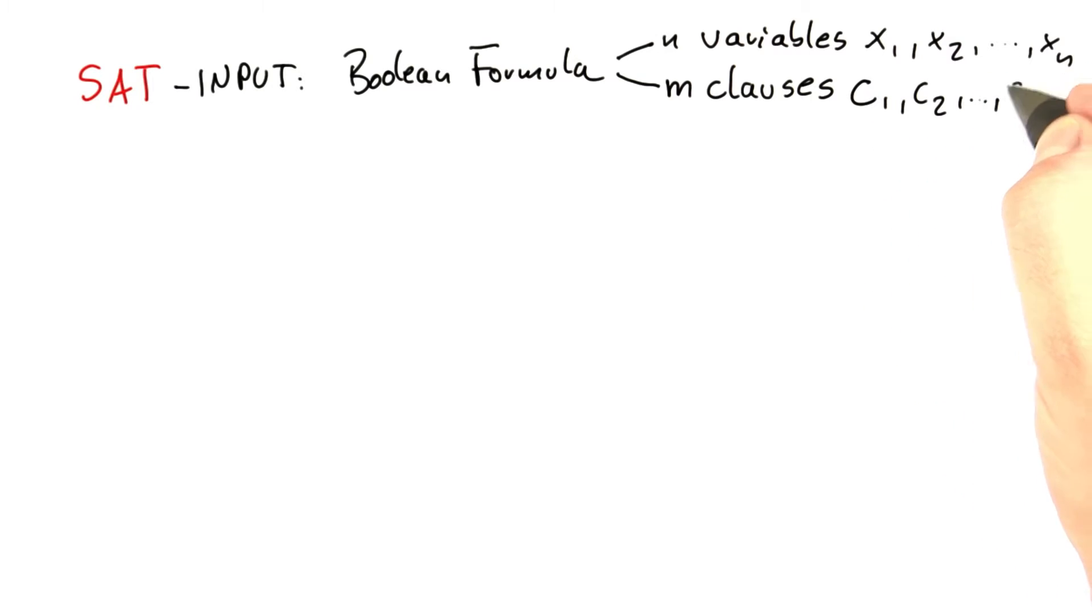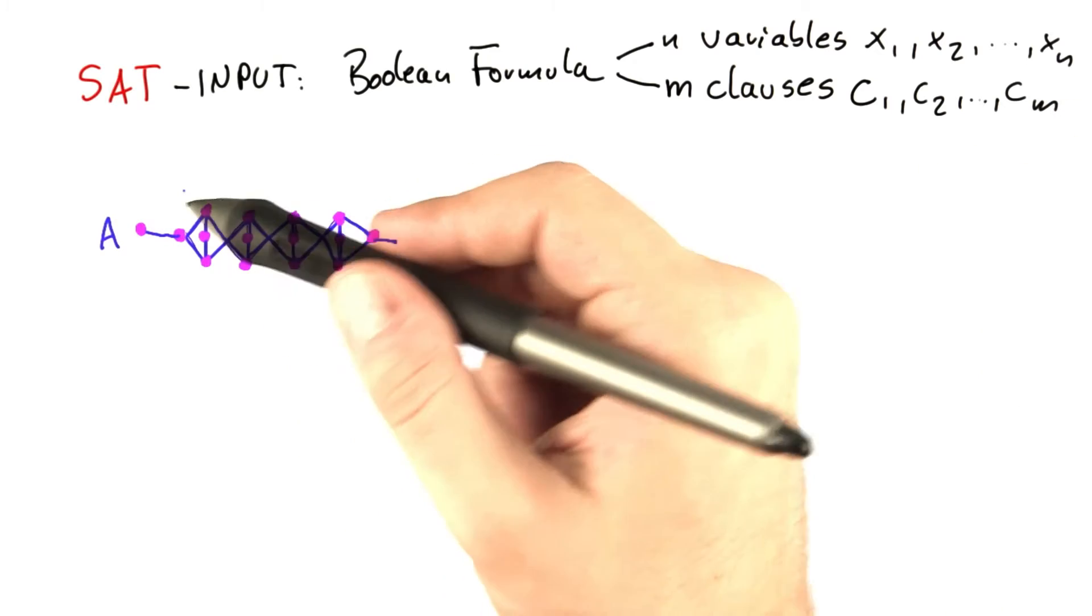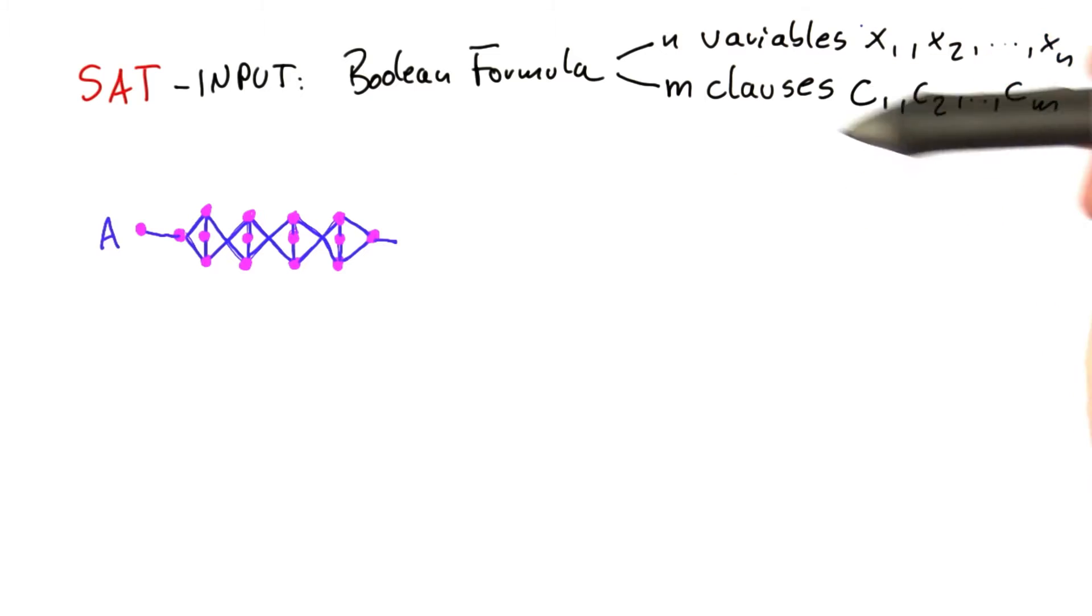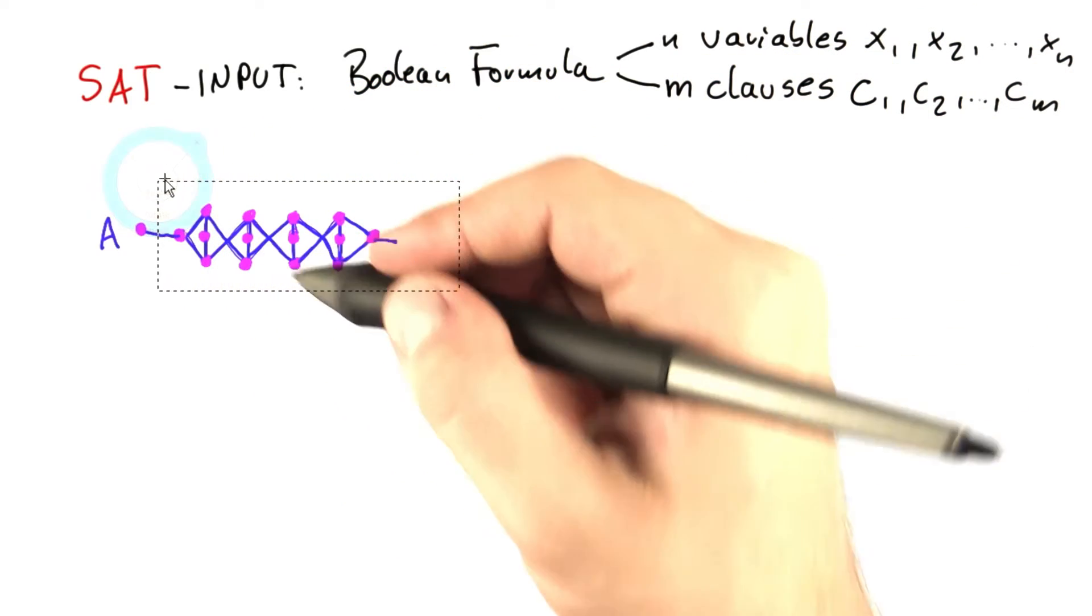and so on until you reach cm. And we're now going to construct a graph that represents or encodes this Boolean formula here, and we are going to do this just as we have done before.